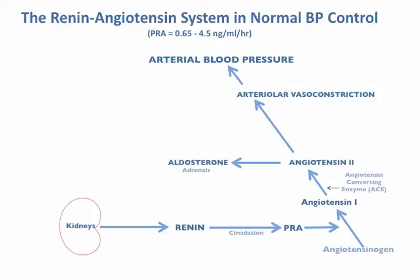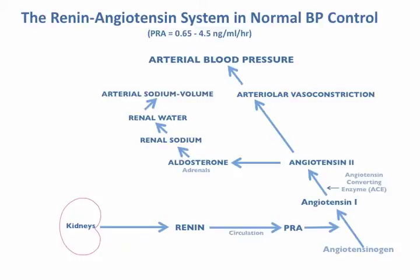At the same time, angiotensin-2 increases aldosterone secretion from the adrenals. Aldosterone, in turn, increases the rate of sodium reabsorption by the kidneys. This would increase the concentration of sodium in extracellular fluids, but the kidneys react by retaining more water, thereby restoring the extracellular sodium concentration, but at the same time increasing the extracellular fluid volume, or the arterial sodium volume status, as illustrated on this slide.